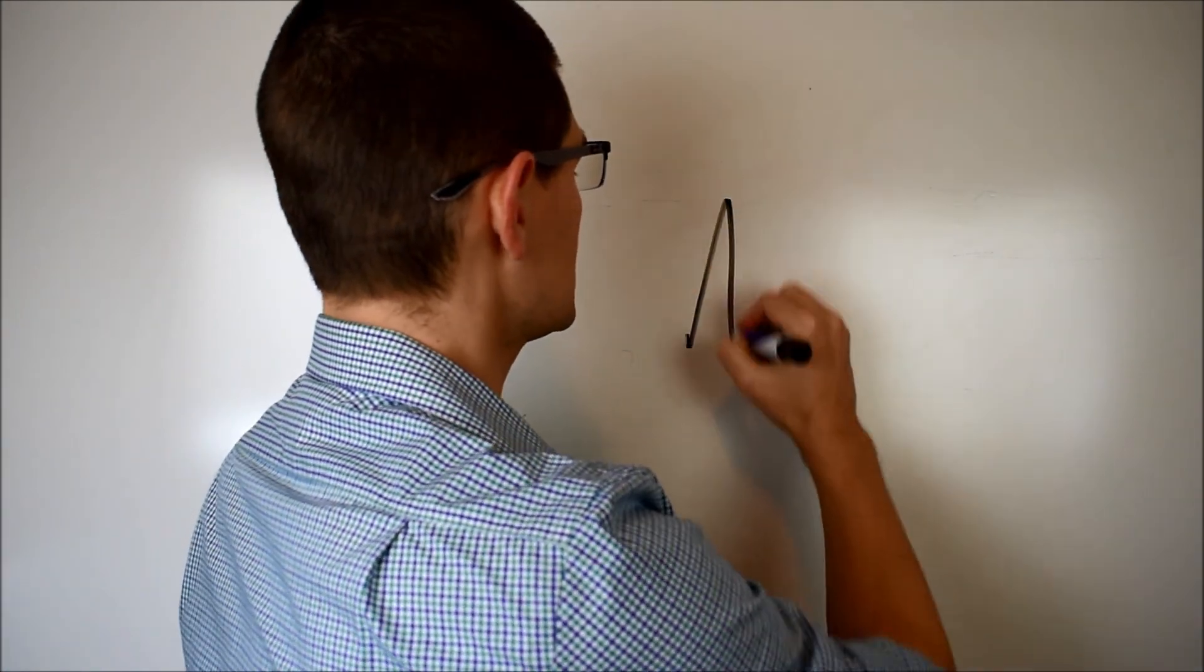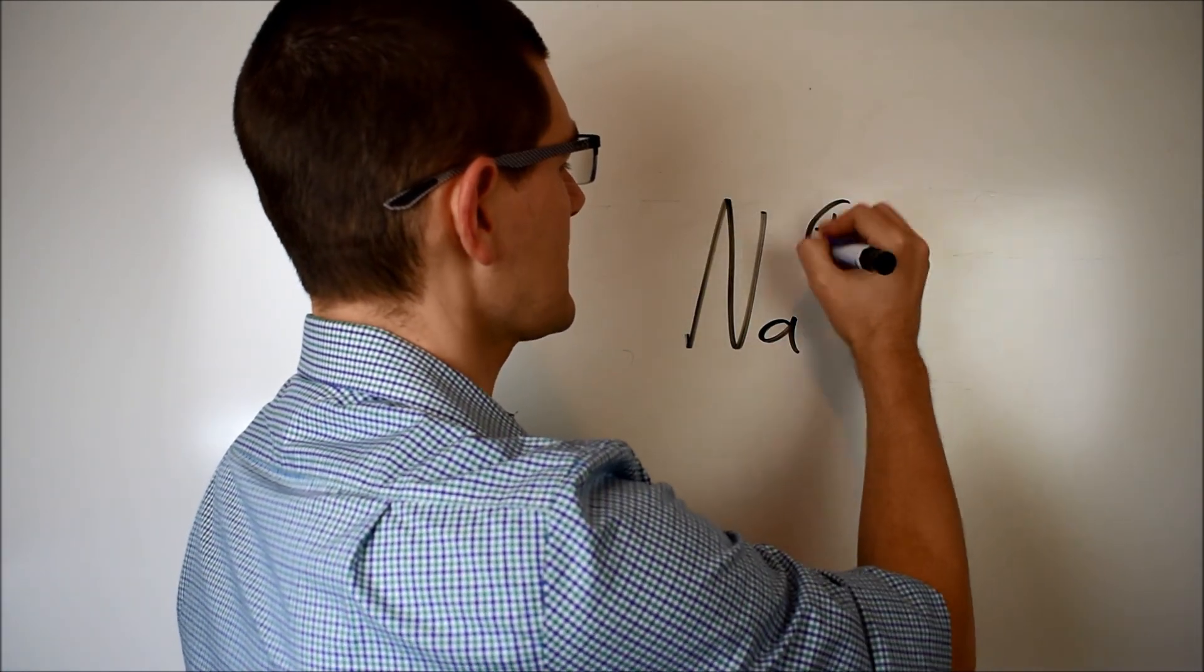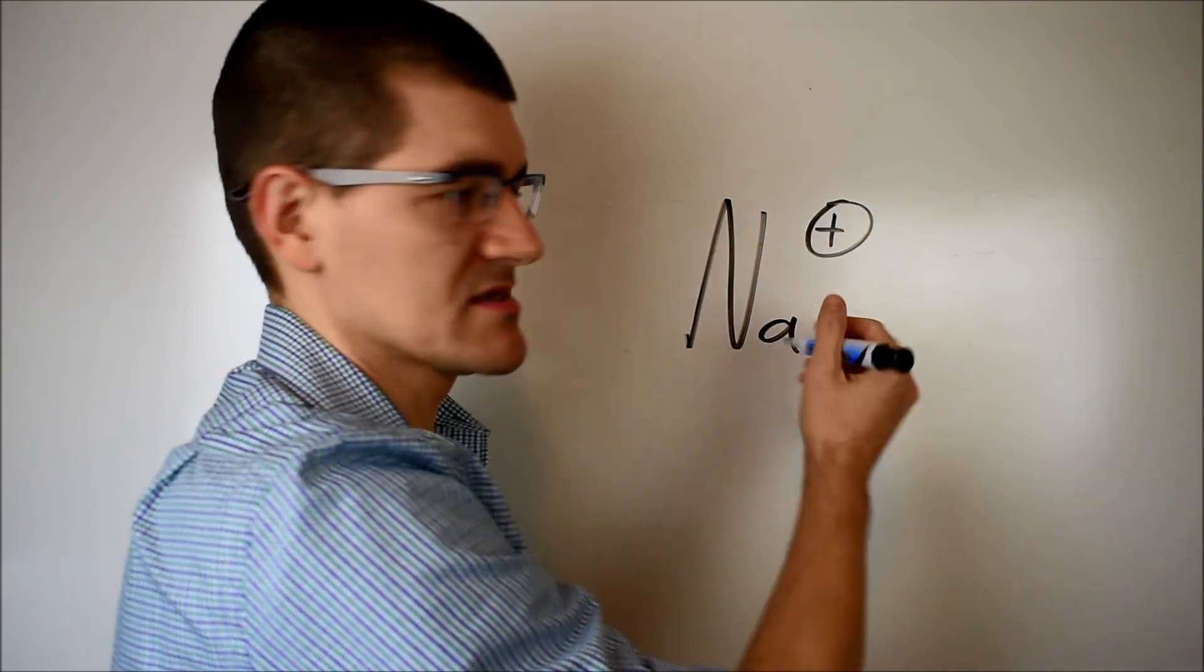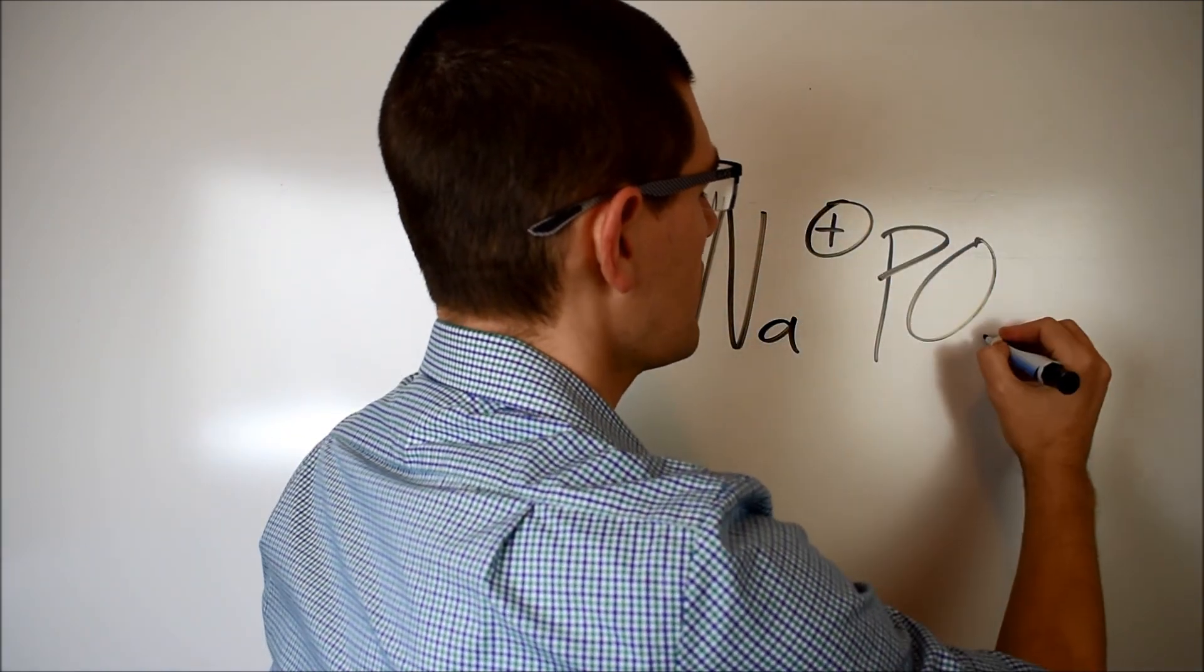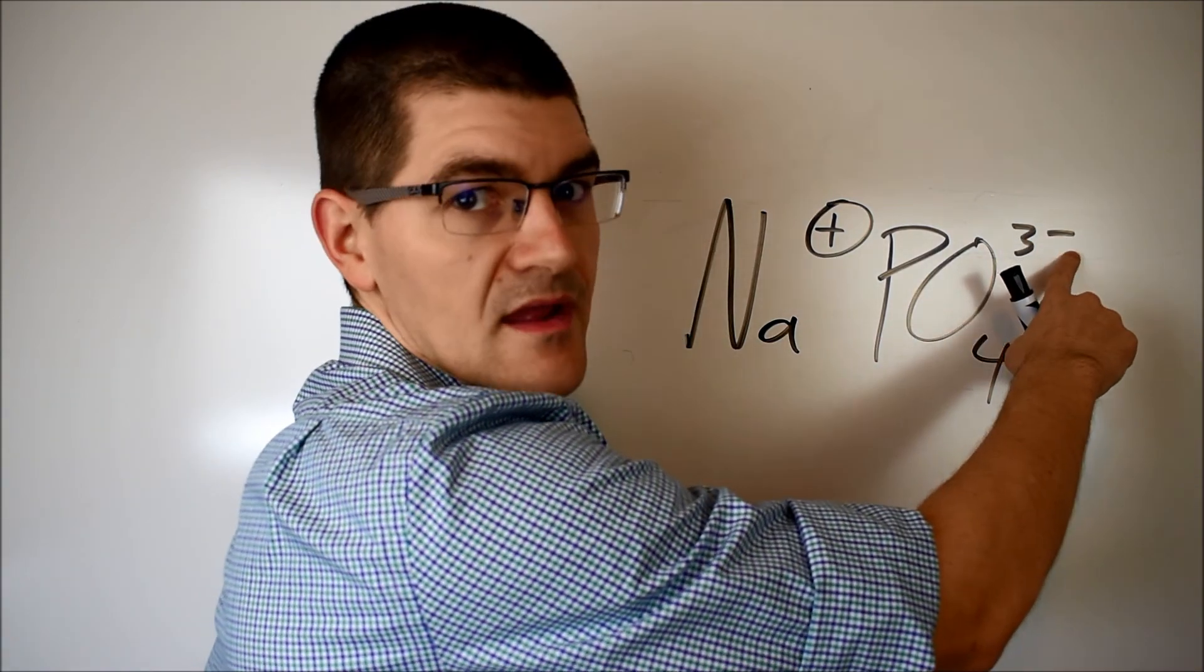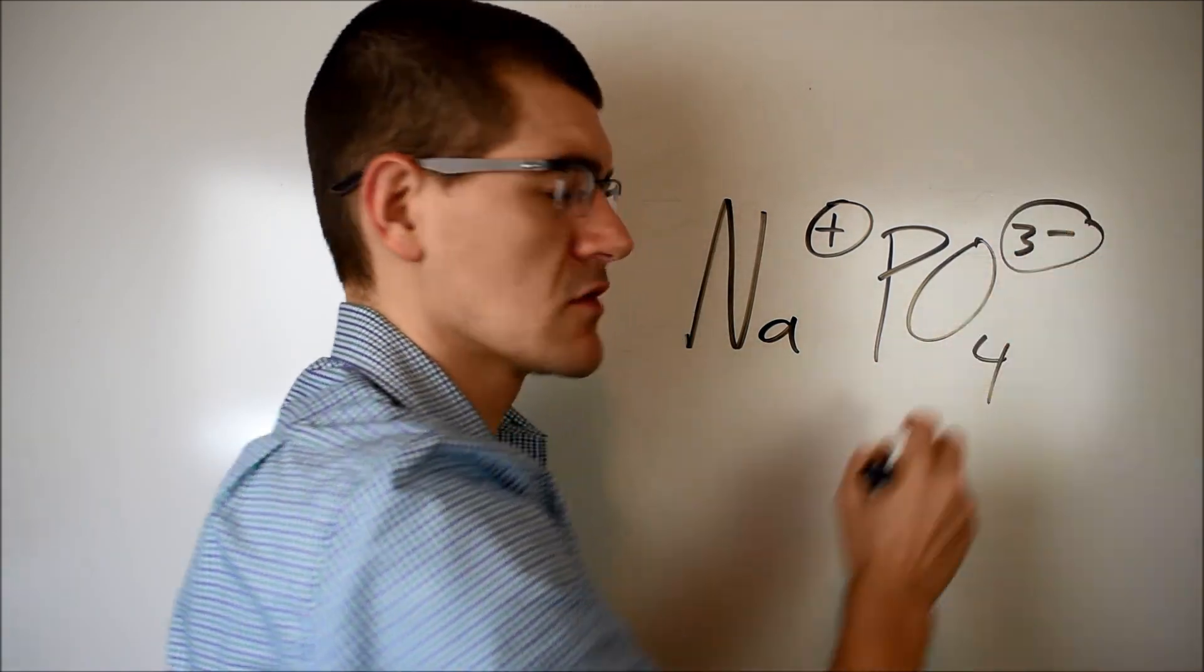Typically an emulsifying salt has a monovalent cation and a polyvalent anion. Let's make that concrete and just say that your emulsifying salt is going to be something like sodium, monovalent, one charge, cation, positive, phosphate, PO4, three minus, polyvalent, three, anion, minus.